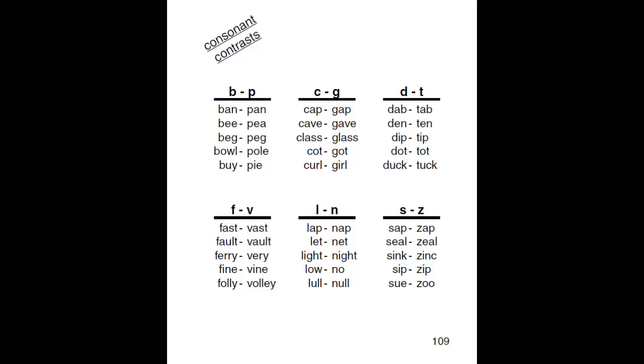Consonant Contrasts. B, P. Ban, Pan. Beg, Peg. Bowl, Pole. Buy, Pie.